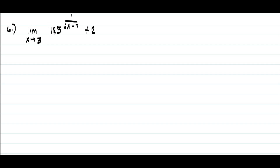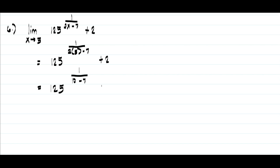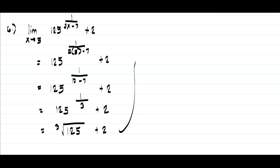In example number six, we have the limit of 125 raised to 1 over 2x minus 7 plus 2 as x approaches 5. Substituting gives us 125 raised to 1 over 2 times 5 minus 7 plus 2, which is 125 raised to 1 over 10 minus 7 plus 2, that is 125 raised to one-third plus 2. The cube root of 125 is 5, so the answer is 5 plus 2, which is 7.